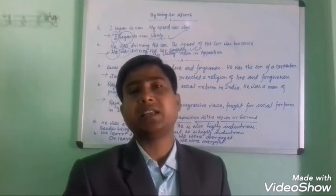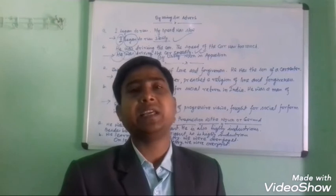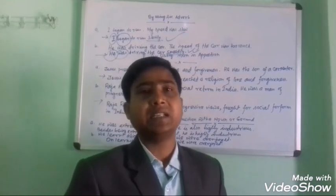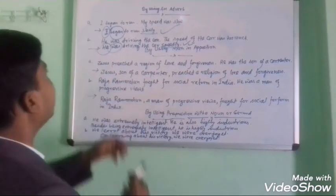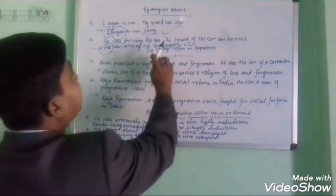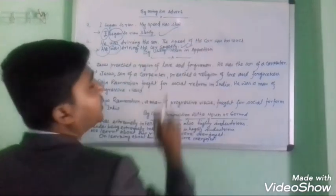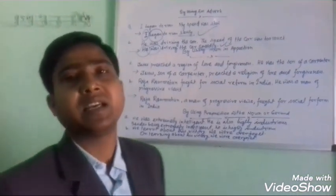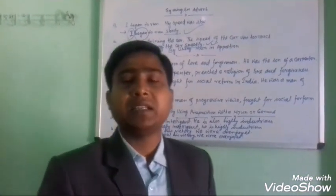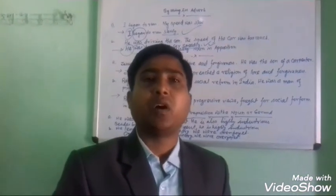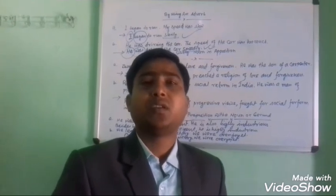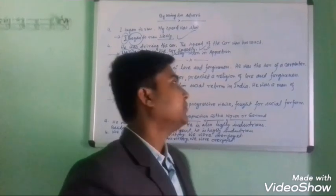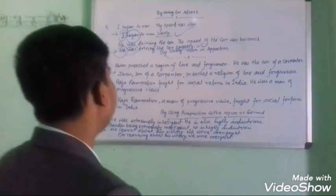Another technique of joining in simple sentence is by using a noun in apposition. Apposition means by the use of a comma, we shall omit one finite verb.